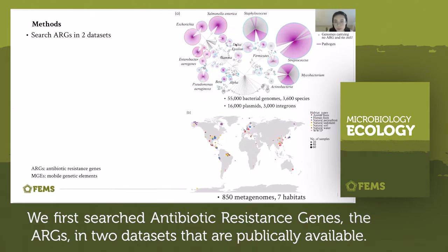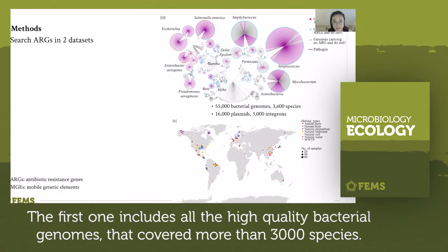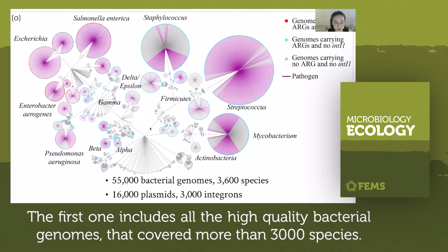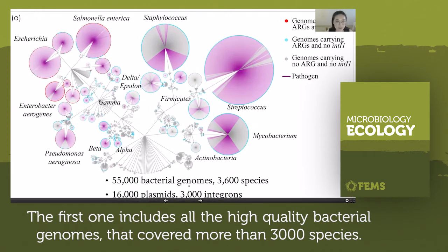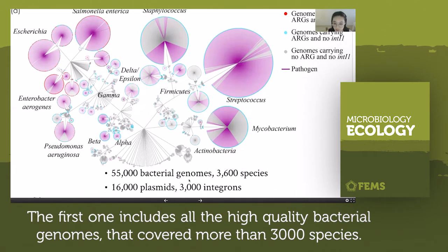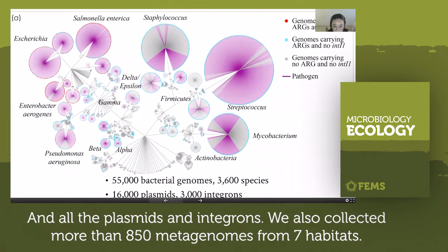We first searched antibiotic-resistant genes, the ARGs, in two datasets that are publicly available. The first one includes all the high-quality bacteria genomes that cover more than 3,000 species, and all the plasmids and integrons.